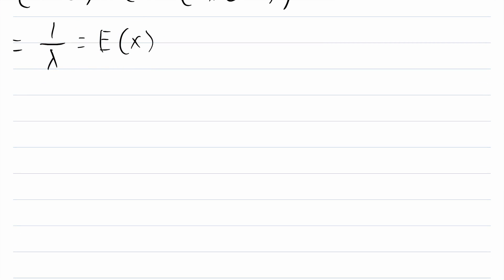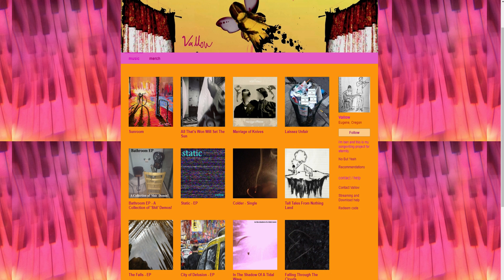I hope this video helped you understand why the expected value of the exponential distribution is 1 over lambda. Let me know in the comments if you have any questions, need anything clarified, or have any other video requests. Thank you very much for watching — I'll see you next time, and be sure to subscribe for the swankiest math lessons on the internet.